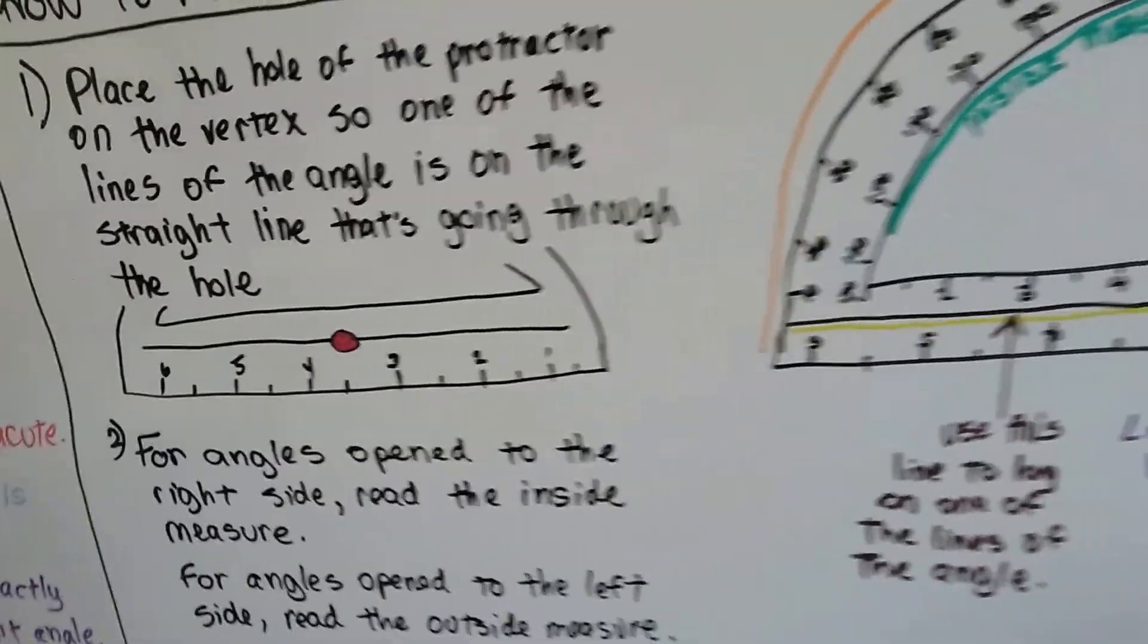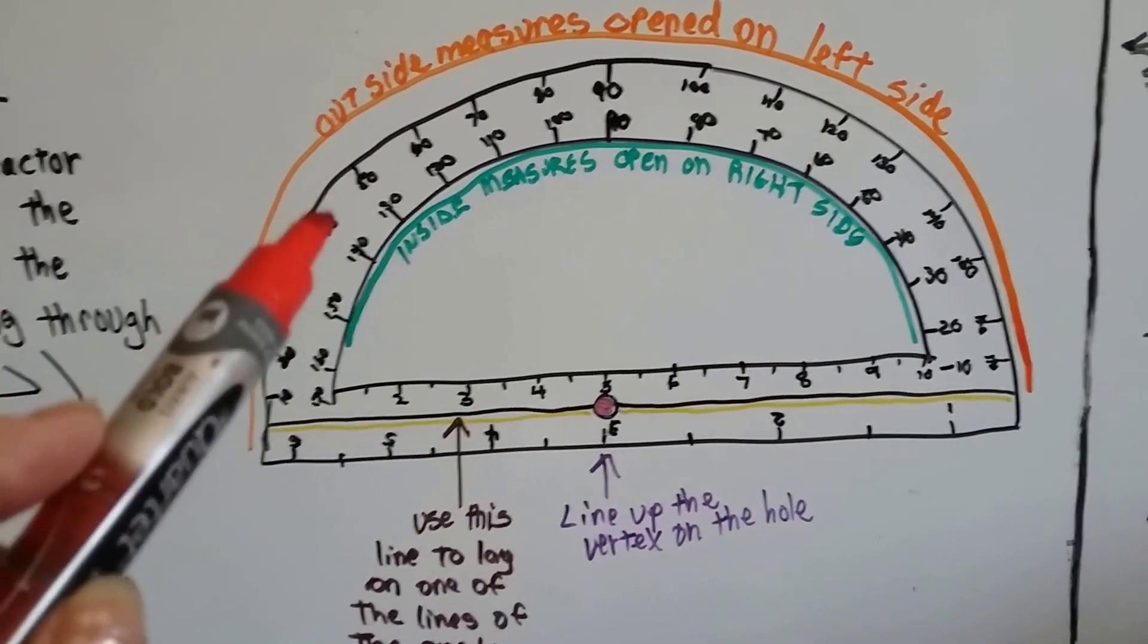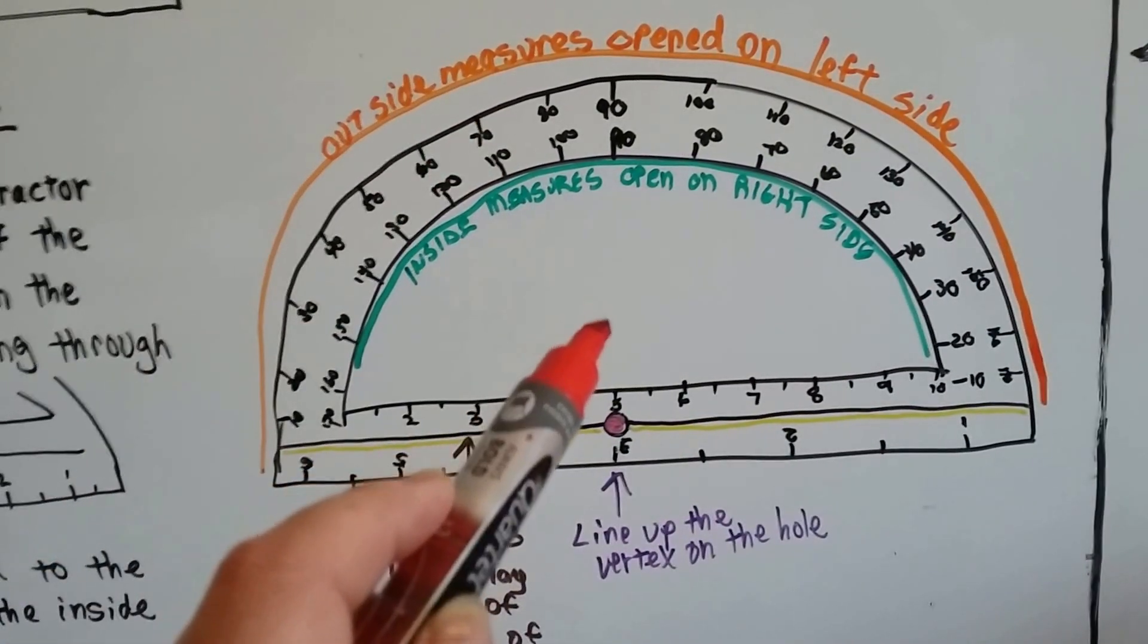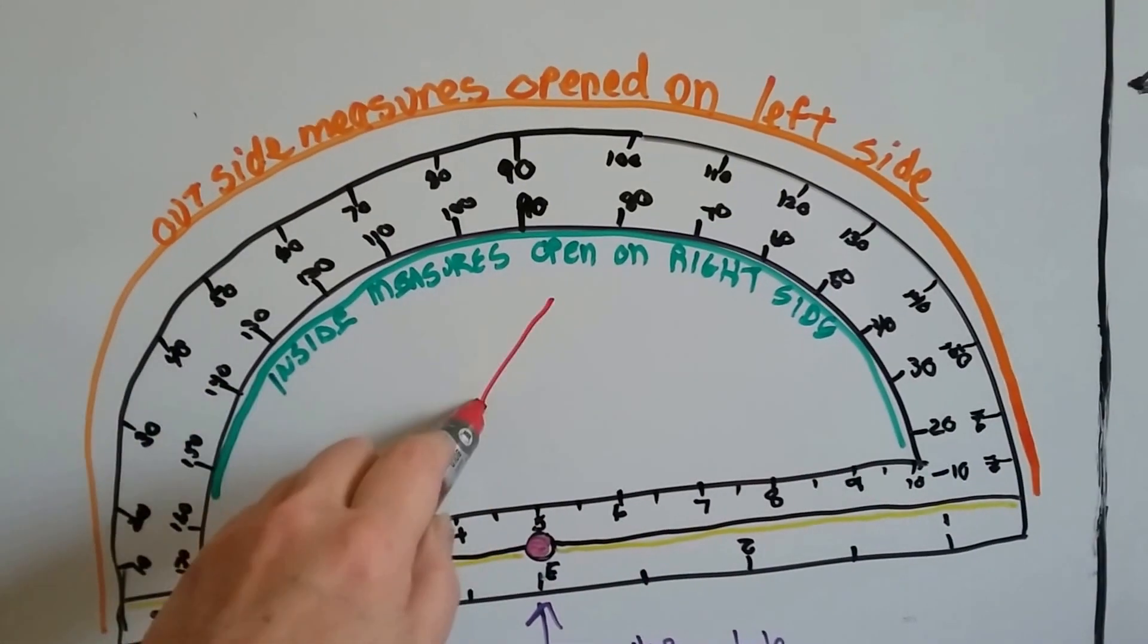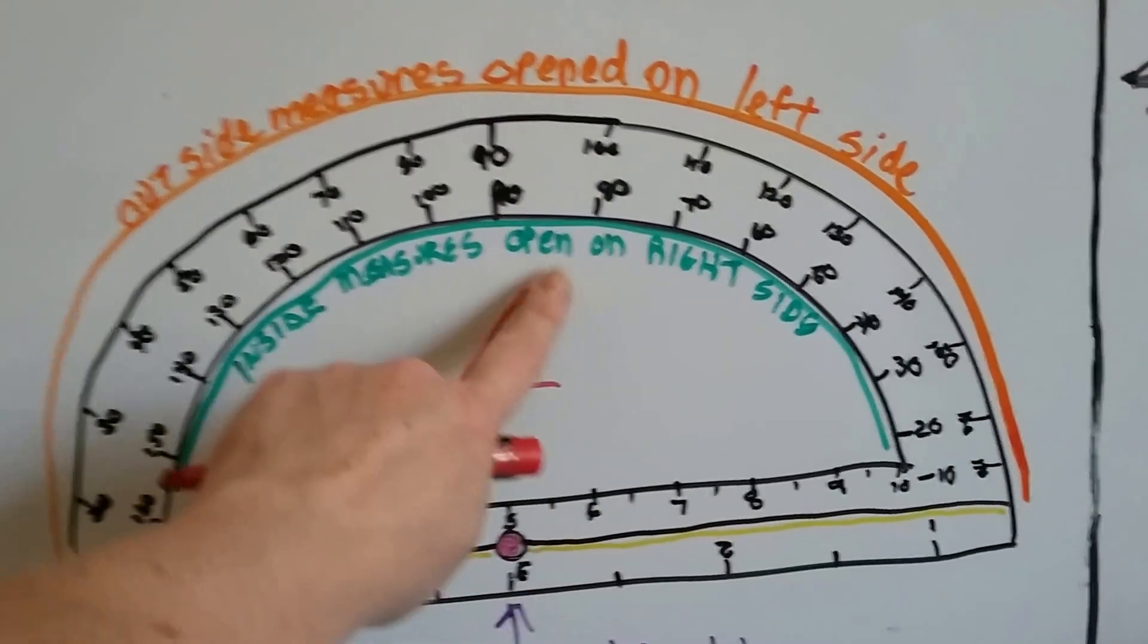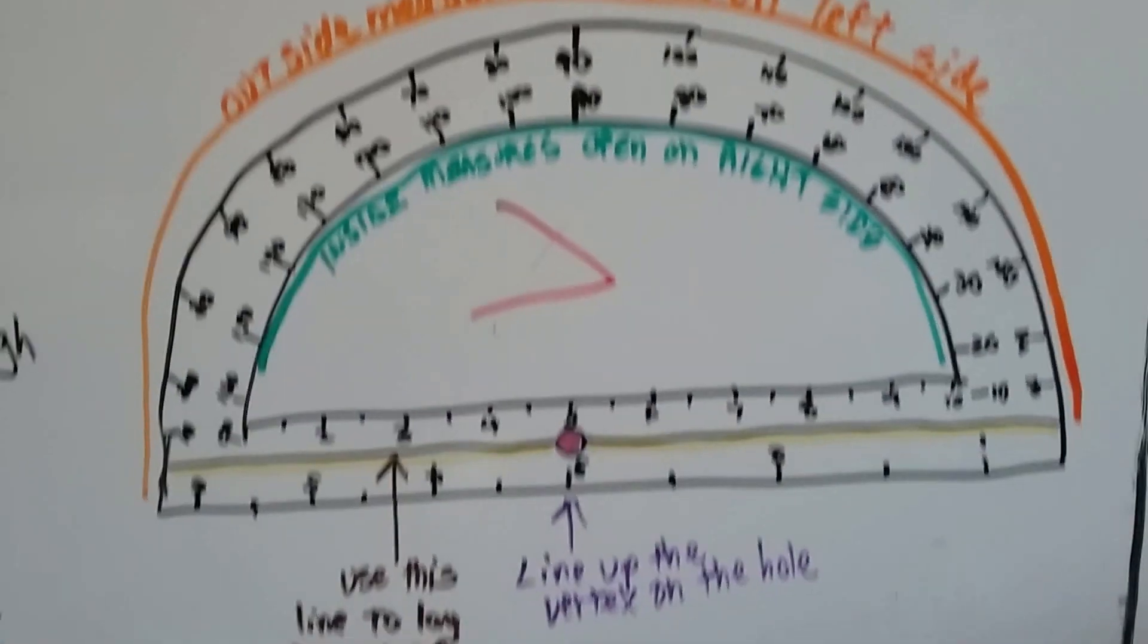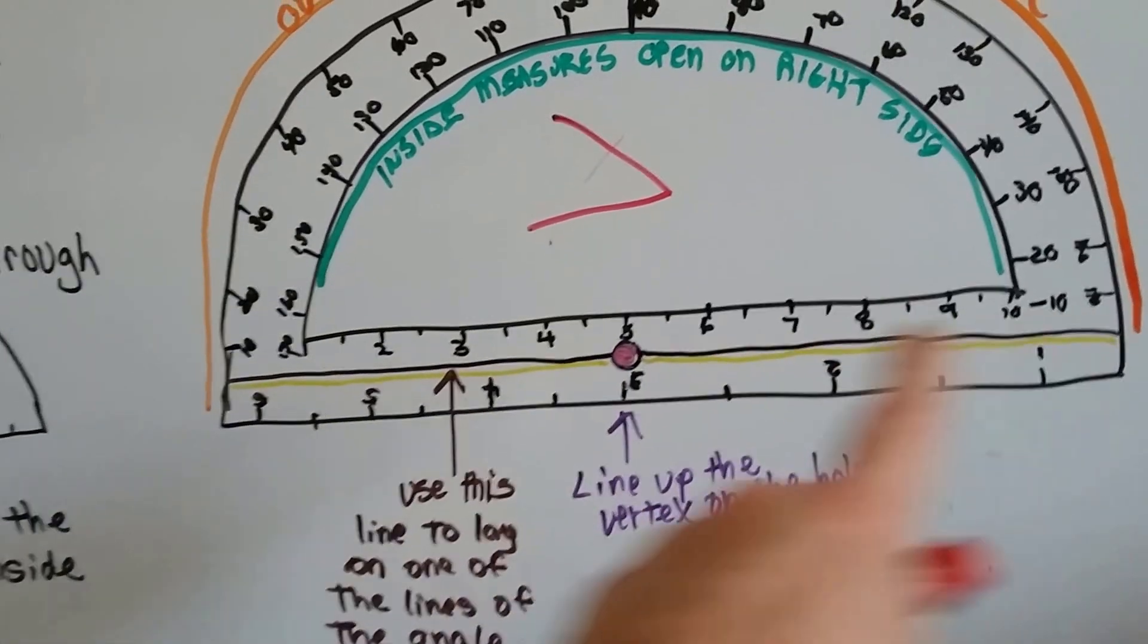So, this is what it's going to look like really big. It's got measures on the outside and it's got measures on the inside. And these are meant for if the angle is open on the right side or the left side. If it's open on the right side like this, then we'd use these inside measures. If the angle is open on the left side like this, we use the outside measures. See? Here's the little hole. Here's the straight line that you would use to line up.